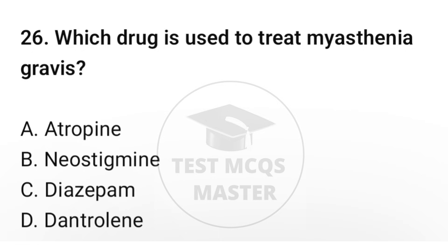Question number twenty-six: which drug is used to treat myasthenia gravis? The correct option is B: Neostigmine.